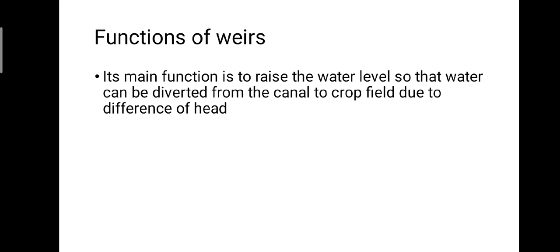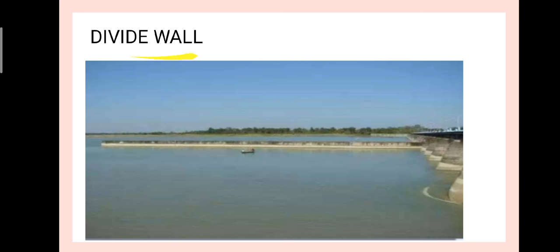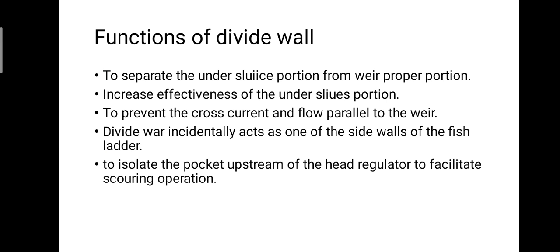The next component is the divide wall. This is a divide wall — a long wall constructed at right angles to the weir or barrage. It may be constructed with stone masonry or cement masonry. The function of the divide wall is to separate the under-sluice portion from the weir proper portion, to increase the effectiveness of the under-sluice portion, and to prevent cross-currents and ensure flow parallel to the weir.